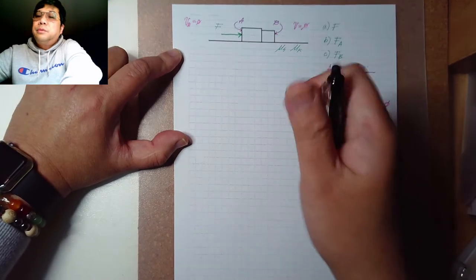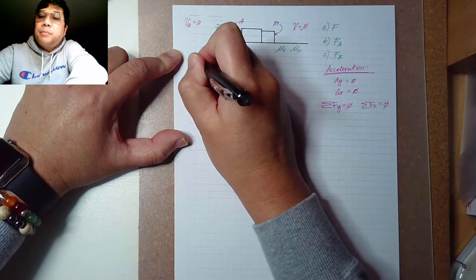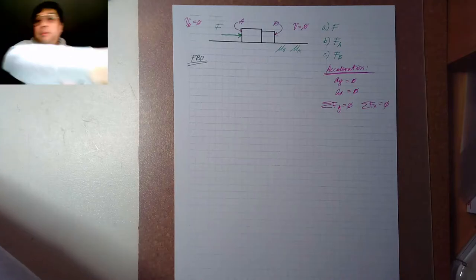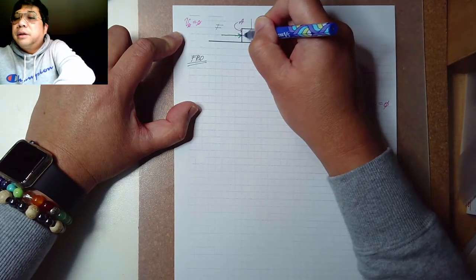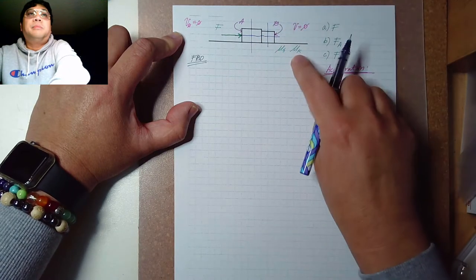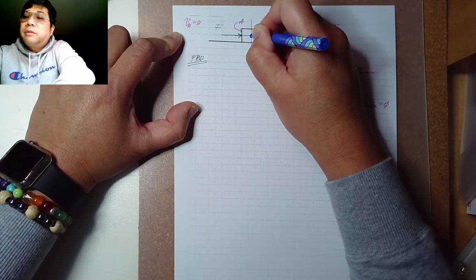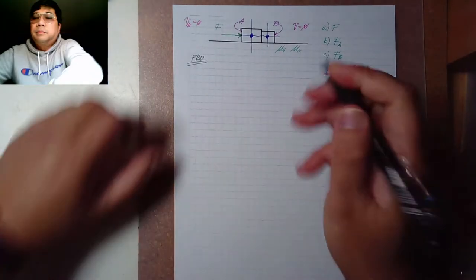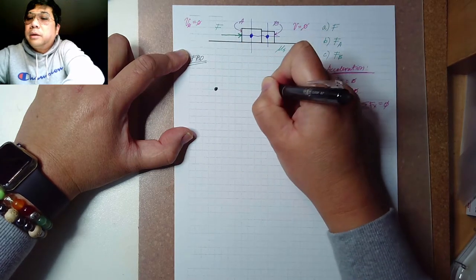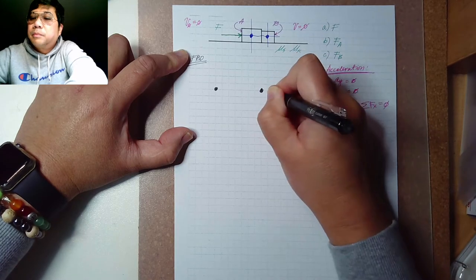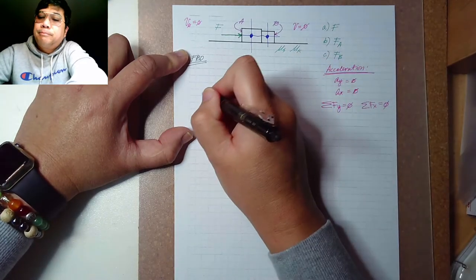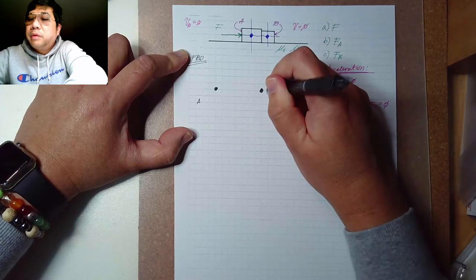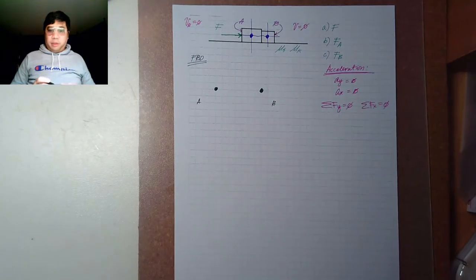The first step is to work on the free body diagram. We draw the imaginary X and Y coordinates acting on both block A and block B, with a dot representing each block. Let's draw block A and block B separately.